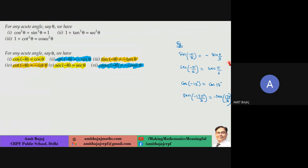Basic formulas: sin²θ + cos²θ = 1, 1 + tan²θ = sec²θ, 1 + cot²θ = cosec²θ. Also important: cos(−θ) = cos θ, sin(−θ) = −sin θ, tan(−θ) = −tan θ. A few examples are shown on the right-hand side of the screen.